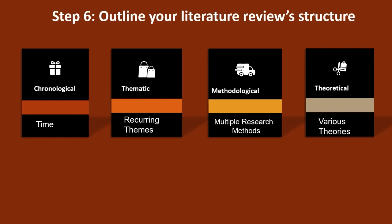If you choose a chronological strategy, be careful to avoid just listing and summarizing sources. Analyze patterns — turning points, key debates that shaped the direction of the field. Make this evident in your literature review and give your interpretation of how and why certain developments occurred. Engage with your studies. When looking at thematic structure, if you find recurring central themes, you can organize your literature review into subsections addressing different aspects of your topic — for example, healthcare policy, language barriers, cultural attitudes, legal status, and economic access for a topic on migrant healthcare inequalities.